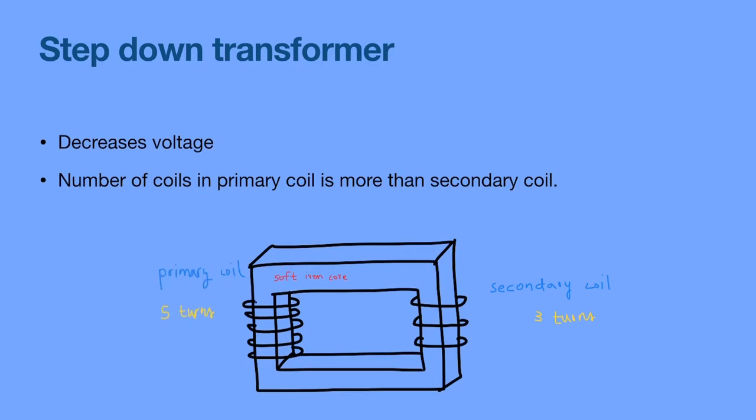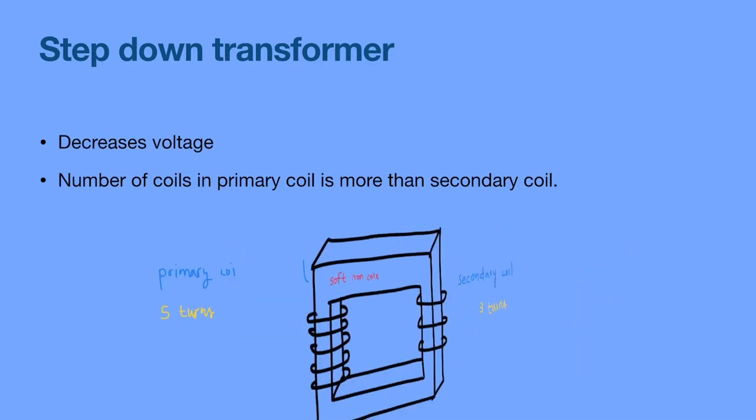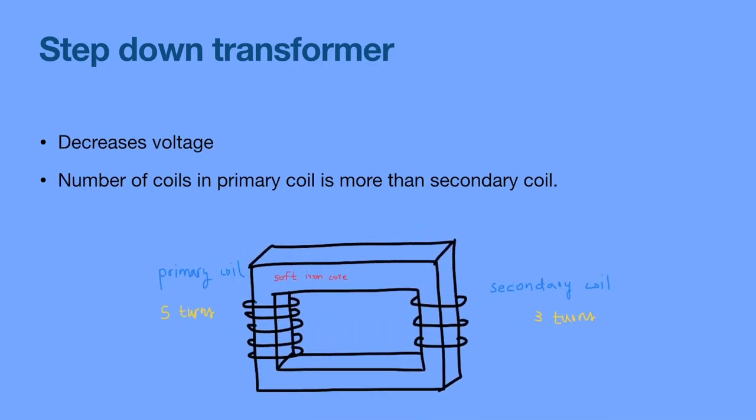A step-down transformer decreases the voltage — stepped down means going down, decreasing. The number of coils in the primary coil will be more than the number of coils in the secondary coil. It is also made of a soft iron core.